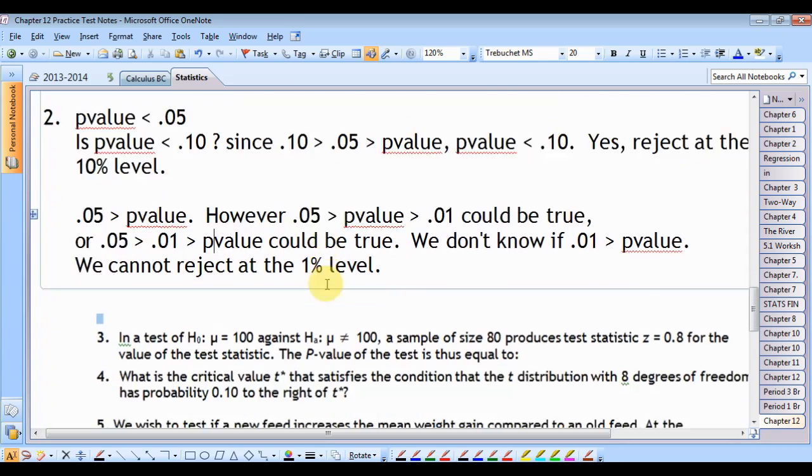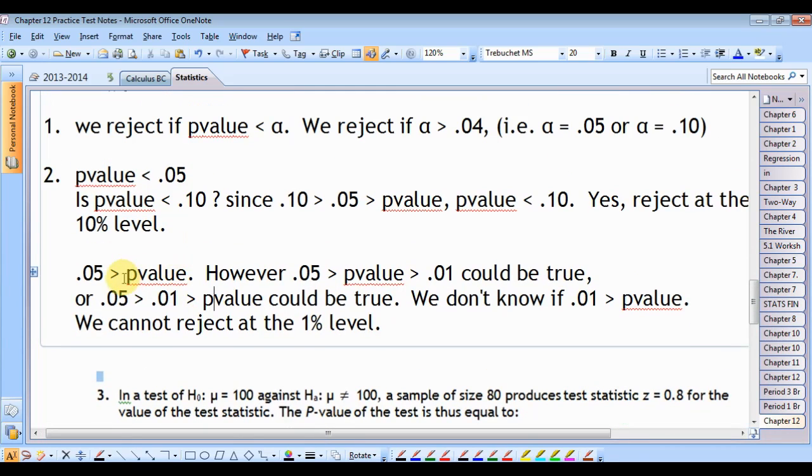However, at the 1% level, we know that 0.05 is greater than our p-value. But we don't know if this is true, if the p-value is between 0.1 and 0.05, or if the p-value is actually less than 0.01. We just don't know. We don't have that information. So since we don't know, we can't reject at the 1% level. The p-value may or may not be less than 0.01.